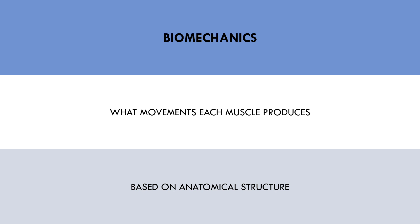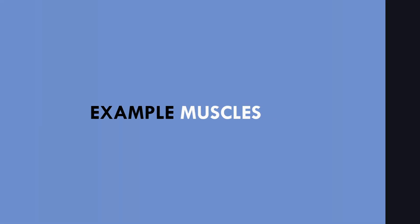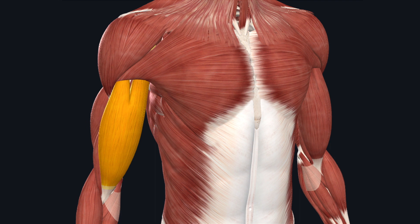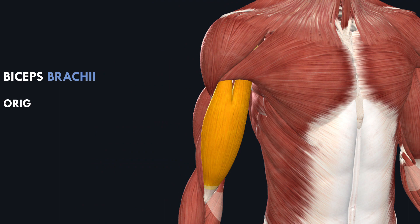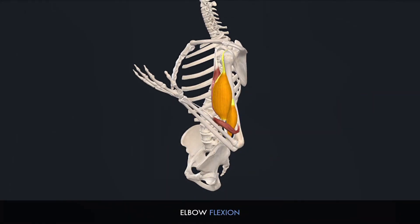To understand these concepts more clearly, let's look at two example muscles. First we have the biceps. The biceps attach at two points up on the scapula. Because this is closer to the midline, these attachment sites are called the origin. The other end of the biceps attaches on the radius, which is a bone of the forearm. Because this is further from the midline than the other attachment site, this is called the insertion. As we can see, the muscle fibers all basically span in the same direction, running directly from the origin to insertion points. This means that the biceps primarily produce elbow flexion, but also contribute secondarily to shoulder flexion and forearm supination.